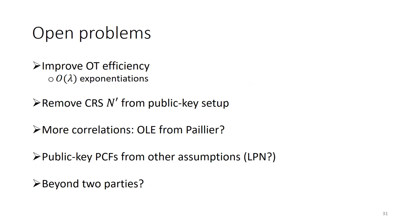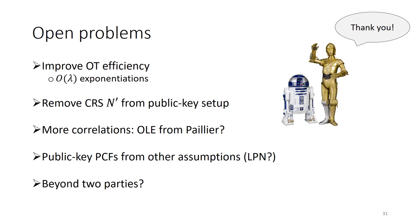I'll conclude by mentioning a few open problems. The PCF for oblivious transfer is less efficient because it requires repeating the multiplication procedure one bit at a time, leading to a larger security parameter overhead in terms of number of exponentiations — it would be great to remove this. Another limitation is that the public key setup requires a common reference string in the form of a trusted RSA modulus. It would also be interesting to expand the class of correlations we can construct — for instance, building OLE correlations rather than just vector OLE from Paillier. Another direction is constructing public key PCFs from other assumptions, such as learning parity with noise where nothing is known in the public key setting. Finally, a big limitation is that all constructions in this work only work for two parties — it would be very nice to have techniques to go beyond this. Thanks for listening and I hope you enjoyed the talk.